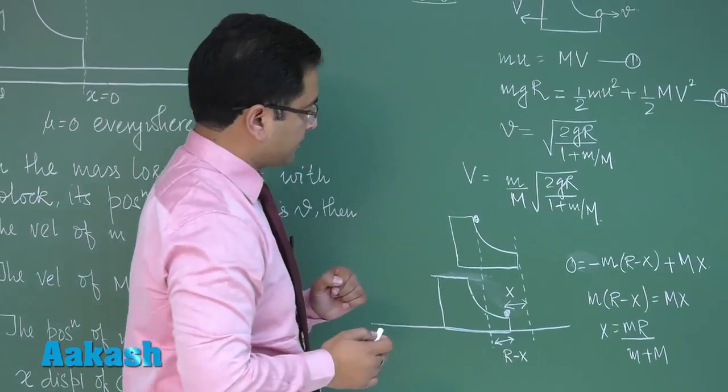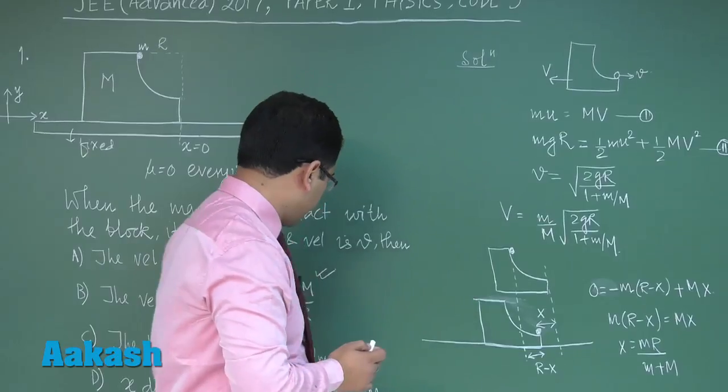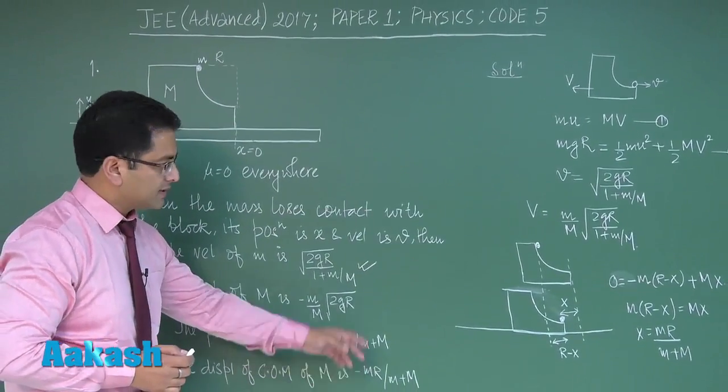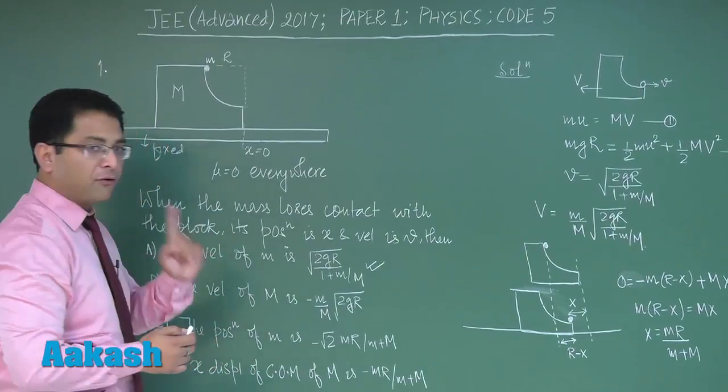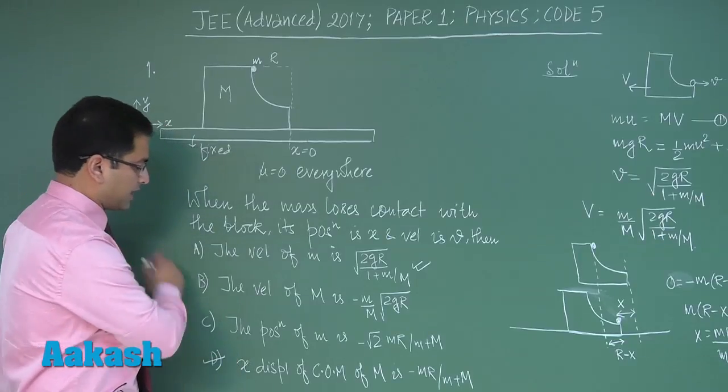So what is X? X would indeed be the displacement of the block and right here X displacement of the center of mass is exactly matching with that. We of course need a negative sign because everything is coordinated so option number D would be correct.